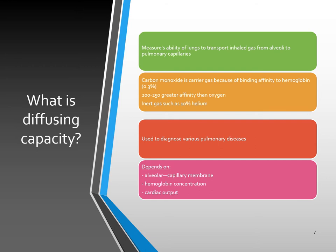We breathe in this mixture of gas — one deep breath — and then blow it out. How much of the carbon monoxide is absorbed into the bloodstream and attaches to the hemoglobin molecule, how much we blow out, and how long it takes, is the determination of whether we have any kind of underlying interstitial disease. This process makes it very valuable to diagnose any kind of pulmonary disorder.